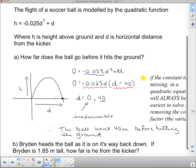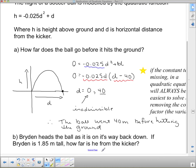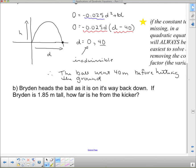Now, let's see what else they are asking us here. It says Bryden heads the ball on its way back down. If Bryden is 1.85 meters tall, how far is he from the kicker? So I've been given one piece of information here, and that is a height. So I need to solve that in for h in my equation. So I get, this is my equation, h equals negative 0.025d squared plus d. And since this is an h, I'm going to sub in 1.85 equals negative 0.025d squared plus d.